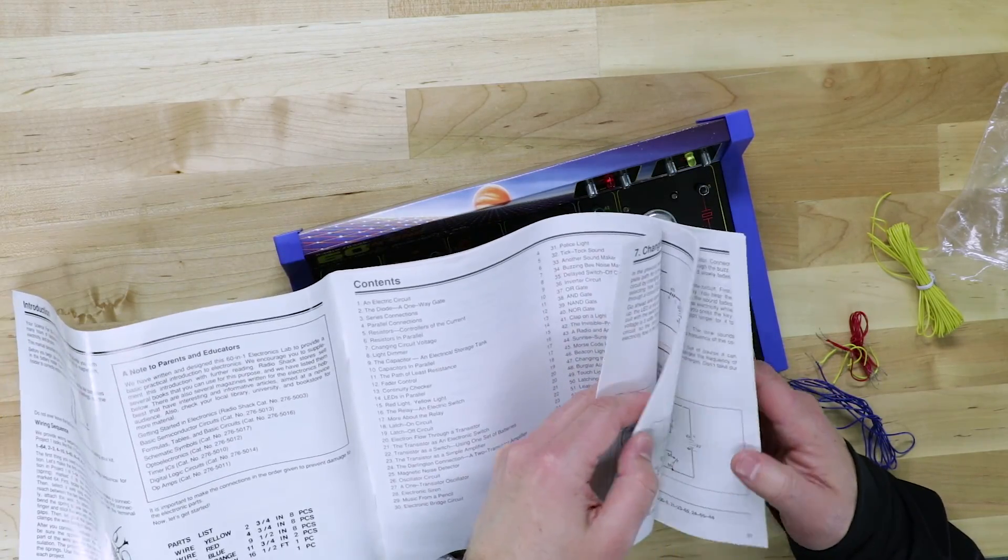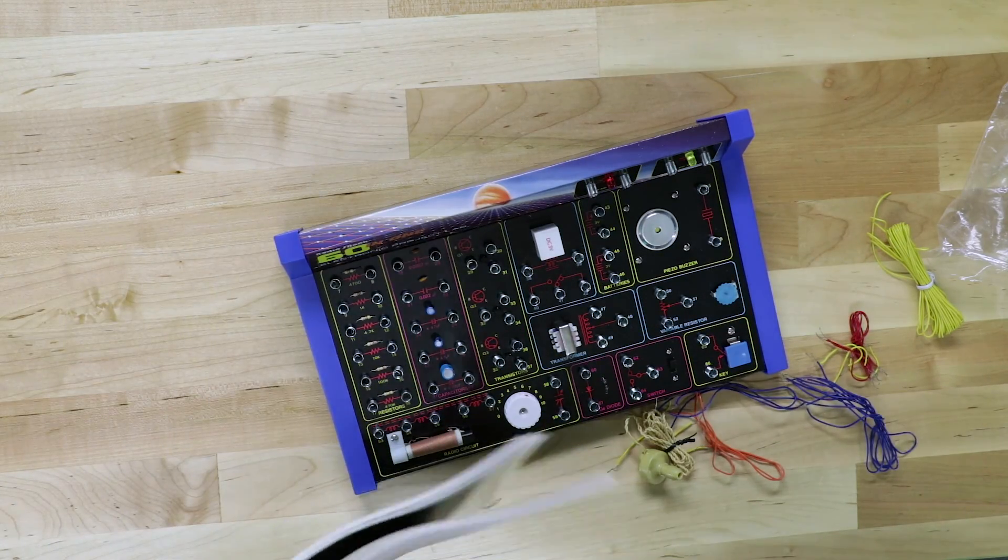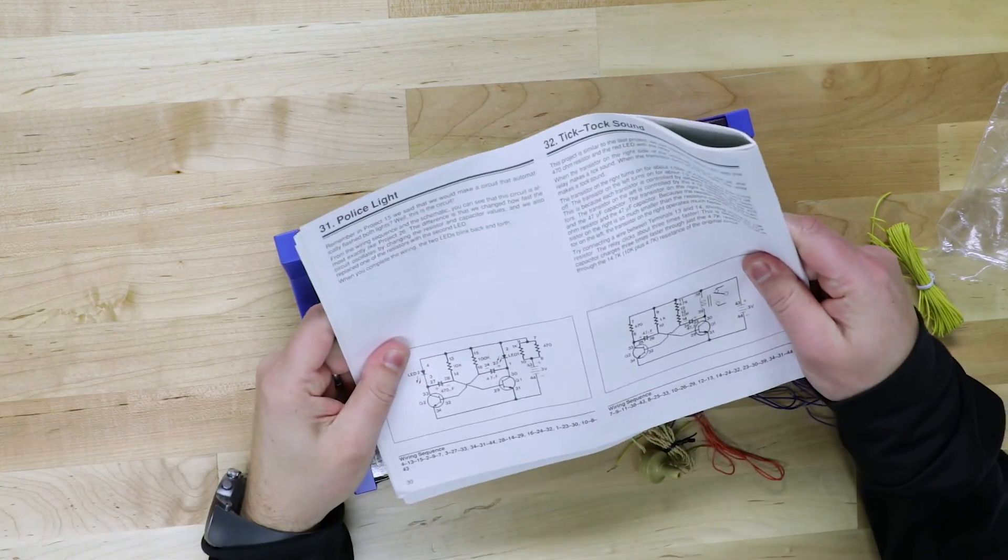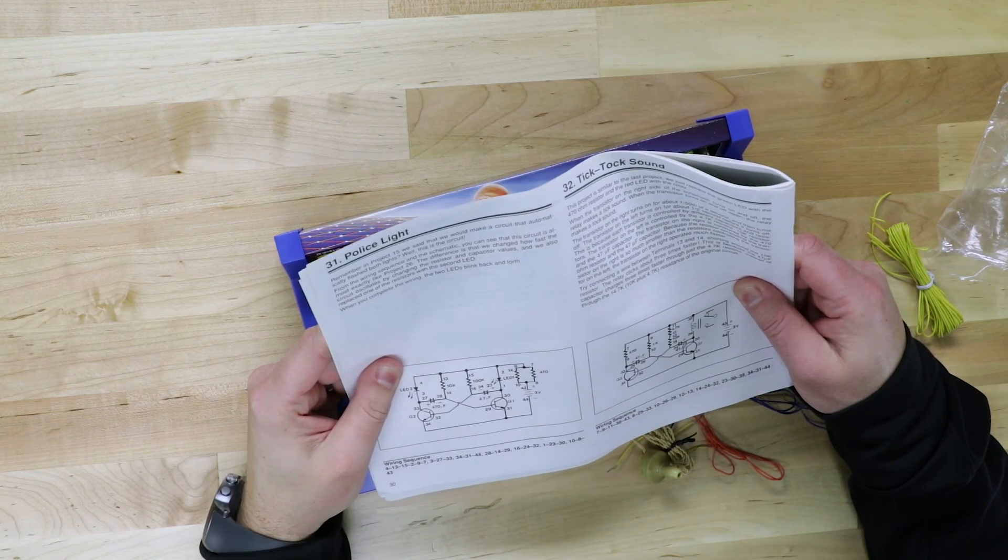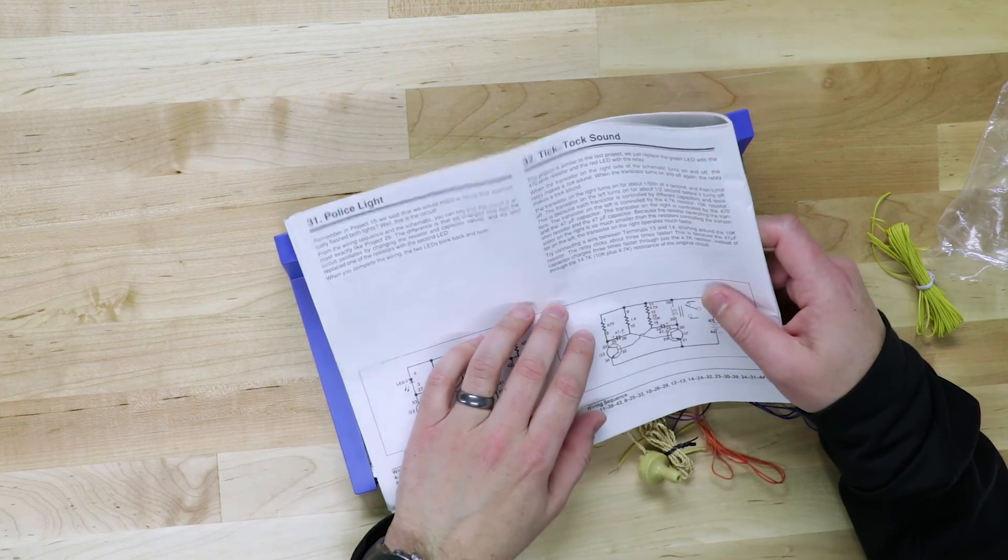So we're going to go to page 30 and we've got a police light here. So the police light says, and the idea here is that you kind of start at the beginning and work your way through because it says,